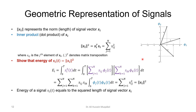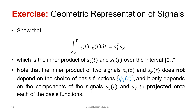We can use the same methodology for two different vectors. If you take the inner product of si and sk — multiply, integrate — you can compute it from the vectors by taking the transpose of one and multiplying by the other. This gives the projection or correlation between the two signals. Importantly, the inner product of two signals does not depend on the choice of basis functions; it only depends on the components of si and sk.